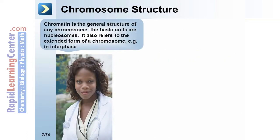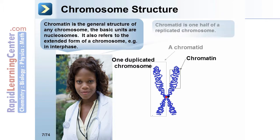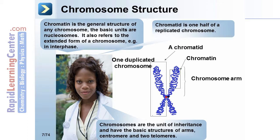Chromosome structure: chromatin is the general structure of any chromosome, composed of the basic units of nucleosomes, and refers to the extended form of a chromosome during interphase. One duplicated chromosome consists of two chromatids — each chromatid is one half of a replicated chromosome. The chromosome is the unit of inheritance, with the basic structure of arms, a centromere, and two telomeres. Here is the centromere, and this segment is the chromosome arm.